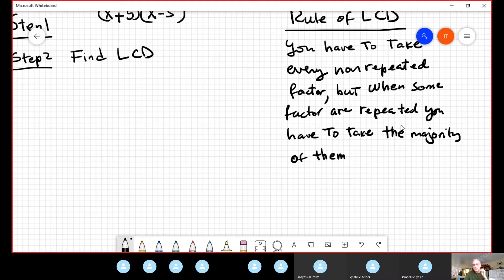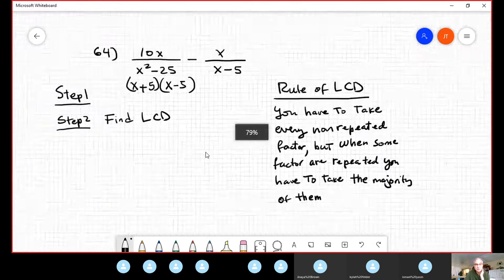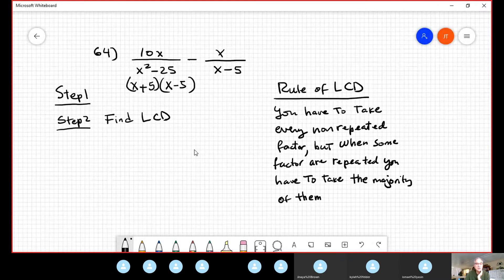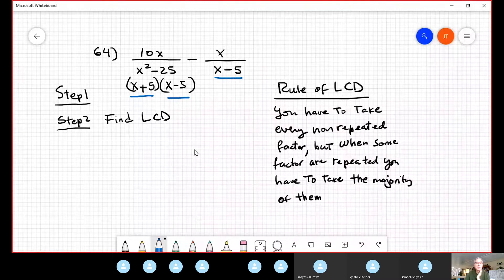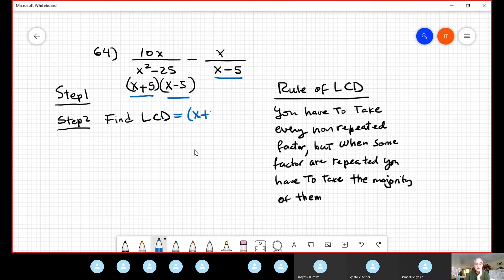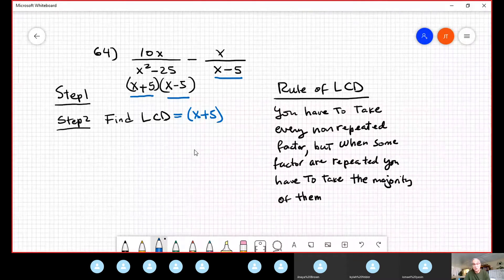In our specific sample, we have two expressions. We have this expression that contains x plus five and x minus five. x minus five is repeated. Therefore, in order to find the least common denominator, you take the non-repeated, and the repeated, you take the majority. But in this case, no minority, because we have only one here, and only one, you take only one, not two.